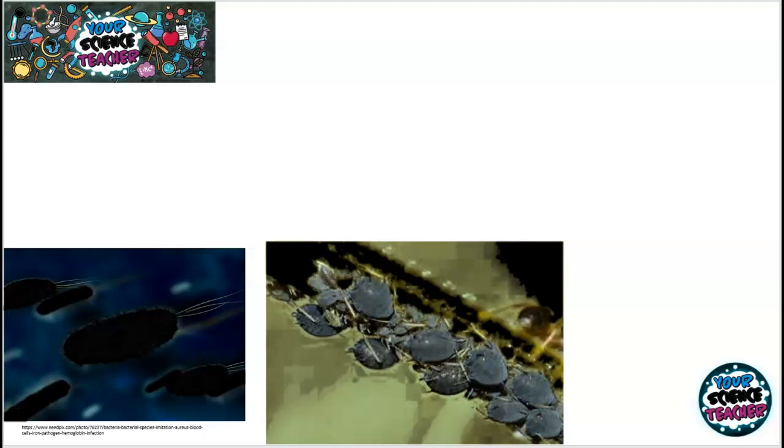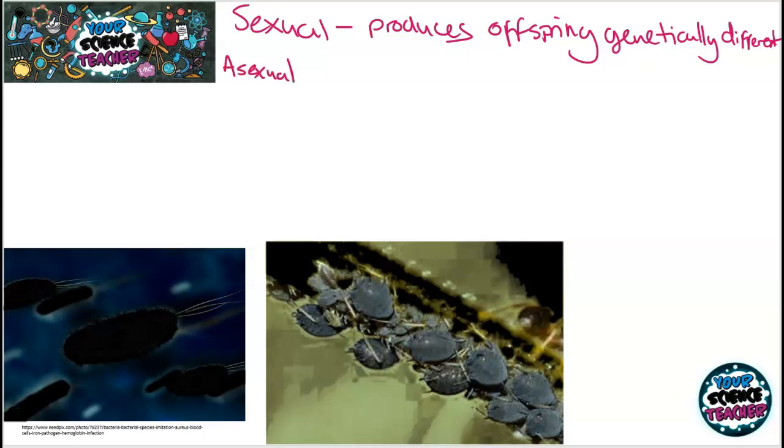The topic of reproduction starts off by looking at two different types of reproduction and there are two that we need to know about. The first one is sexual reproduction, and sexual reproduction produces offspring that are genetically different. The other type is asexual, which produces offspring genetically the same.